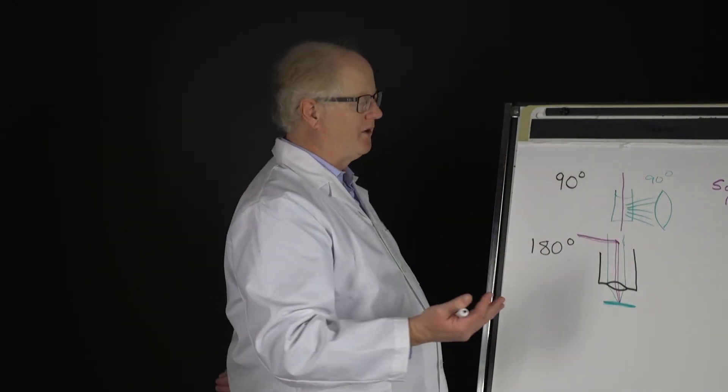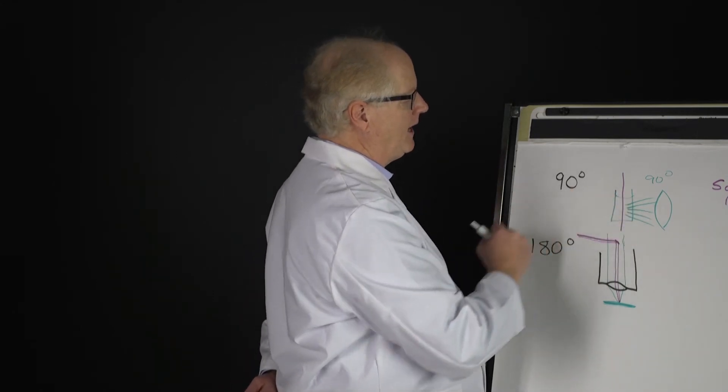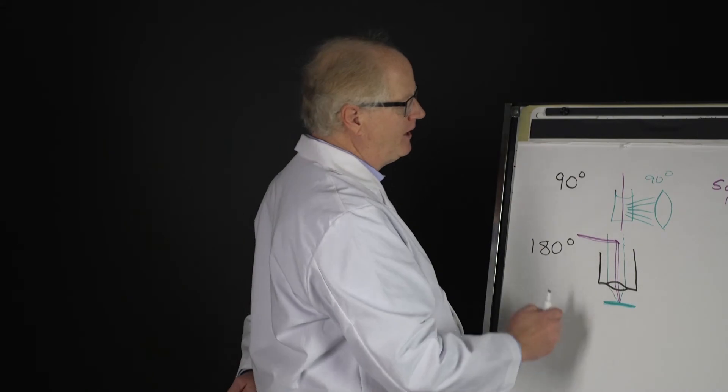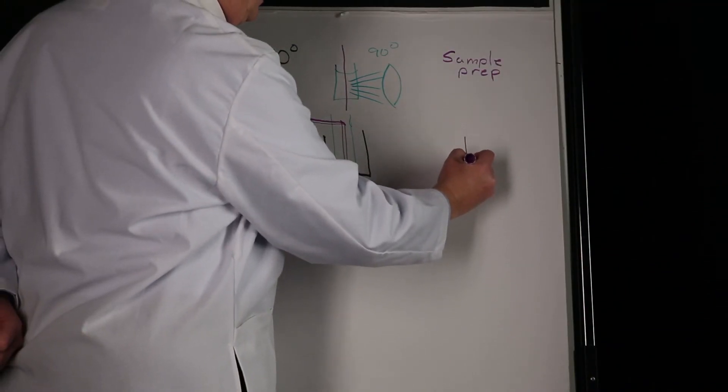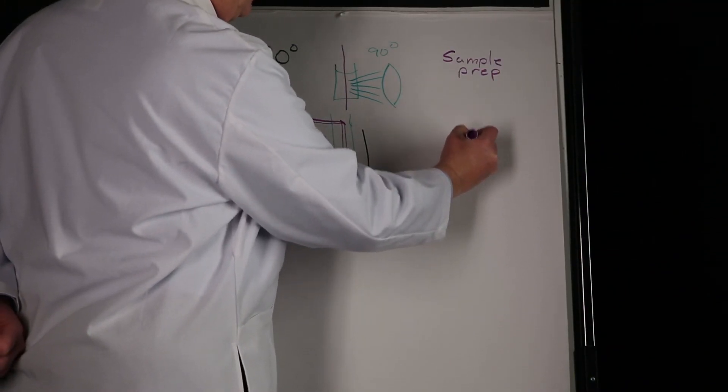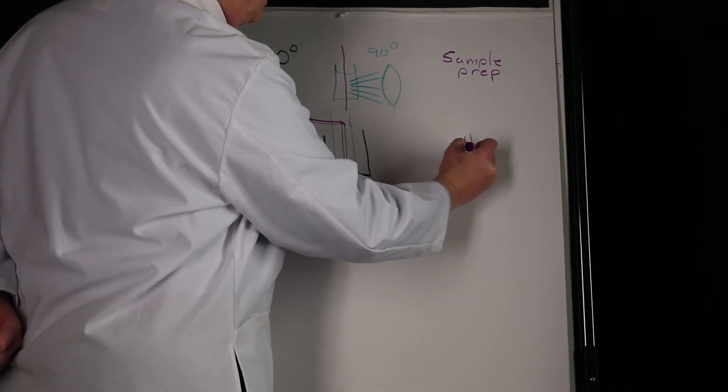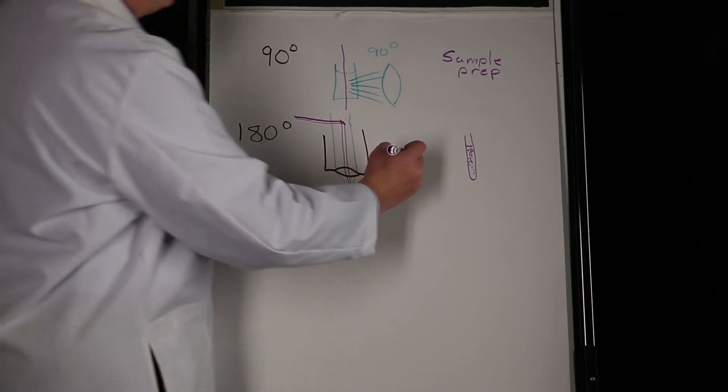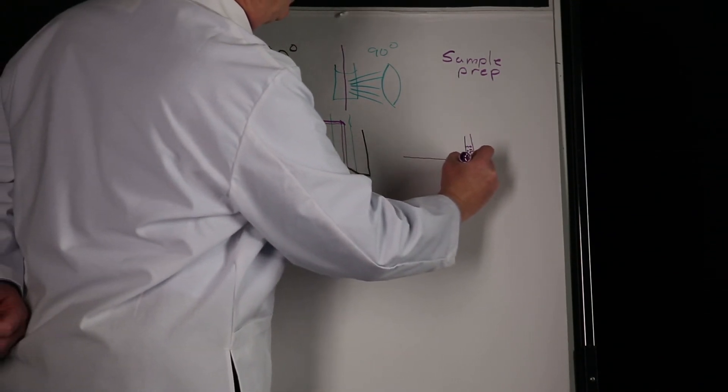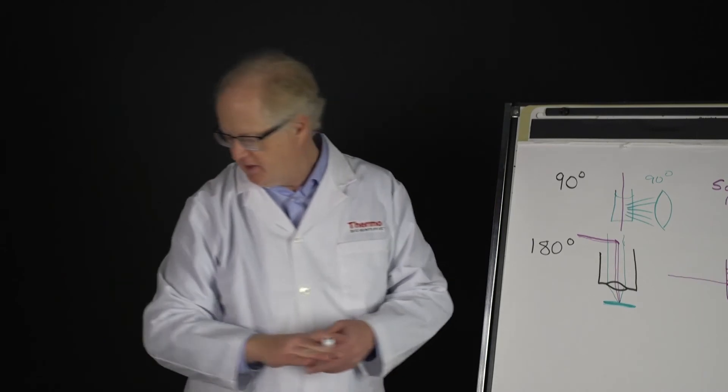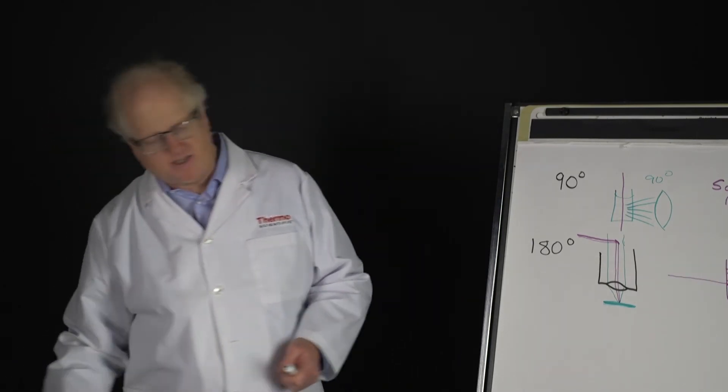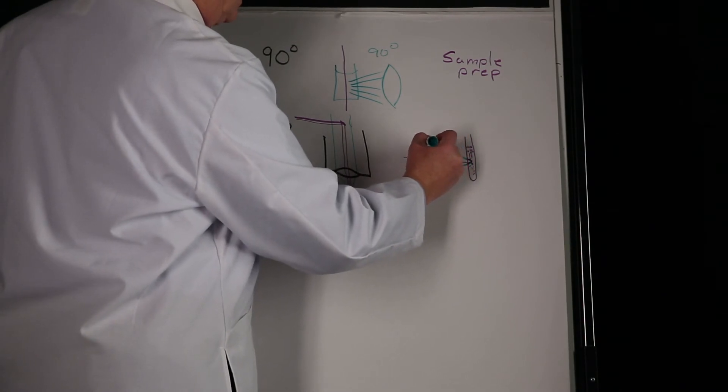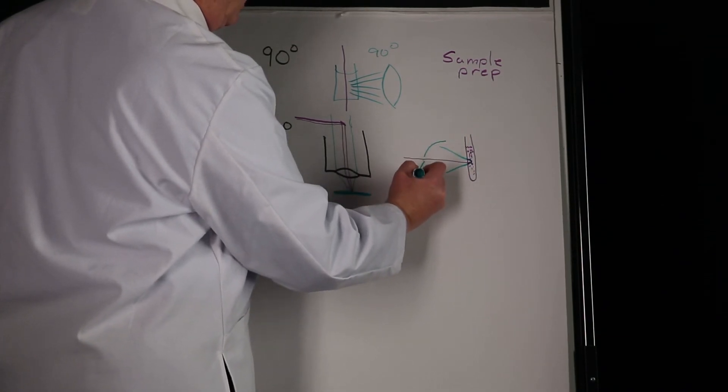You can put a powder in an NMR tube. To redraw that just a little bit here, we've got the NMR tube, and imagine in there is my powder. In this case, I'm going to use 180-degree backscatter. I'm going to shine the laser in on it, then the backscattered light coming off the sample is going to be collected.